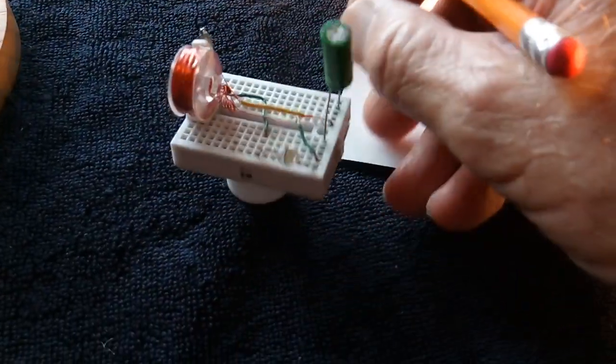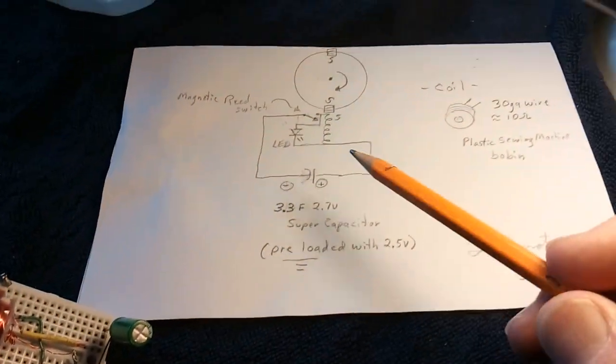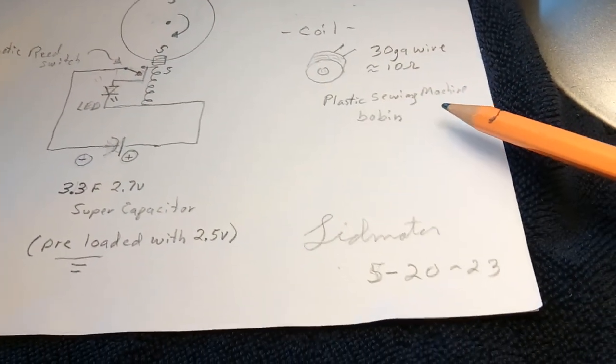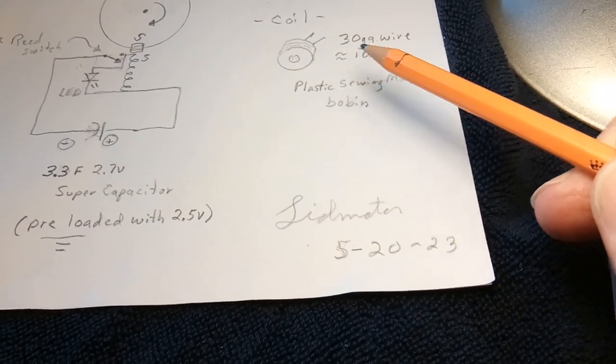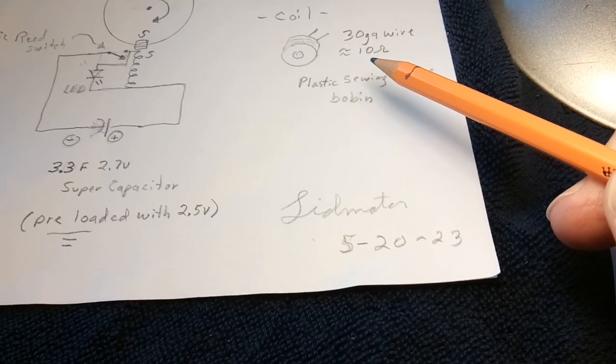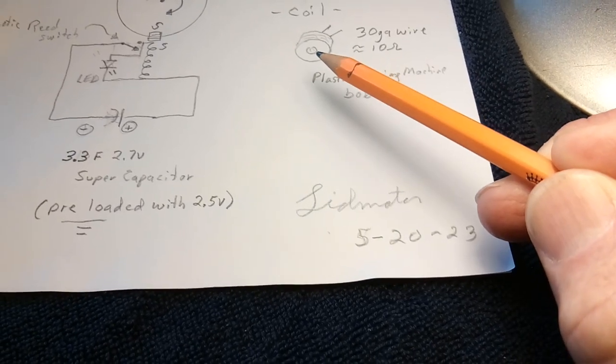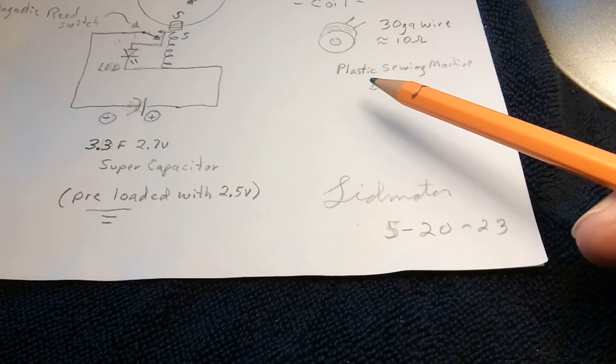Basically, let me show you what's going on with that. It is a sewing machine bobbin, a plastic one, 30 gauge magnet wire, measures about 10 ohms, air core - no metal in the core, it's plastic.